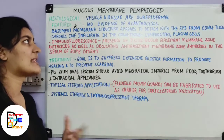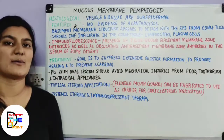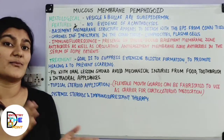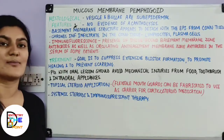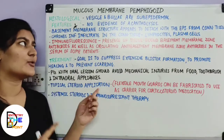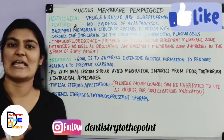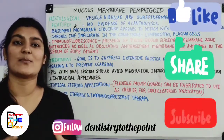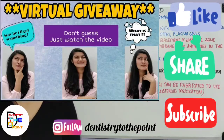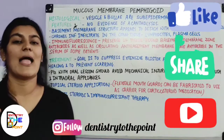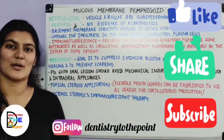This is all about mucous membrane pemphigoid, also known as cicatricial pemphigoid. I hope you understood this, and with this we conclude the pemphigoid topic. In the upcoming video we will cover the differences between pemphigus and the two types of pemphigoid. Stay tuned, and if you found this video helpful, please like, share, and subscribe to our channel.